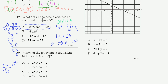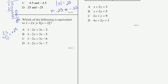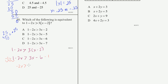Problem 50: Which of the following is equivalent to 1 − 2x > 3(x − 2)? Let's solve this. We have 1 − 2x > 3(x − 2). Distributing the 3 gives 1 − 2x > 3x − 6. Now subtracting 1 from both sides: −2x > 3x − 7.